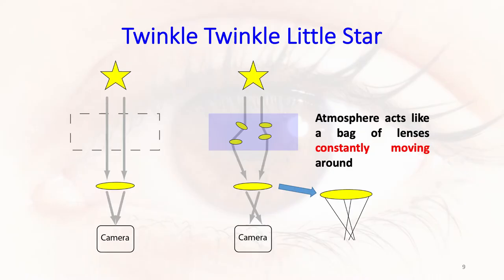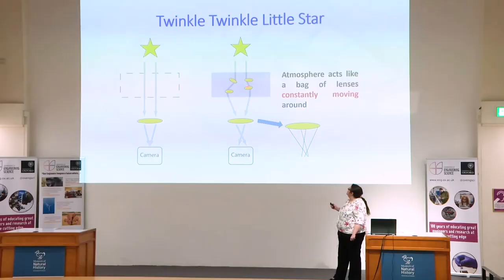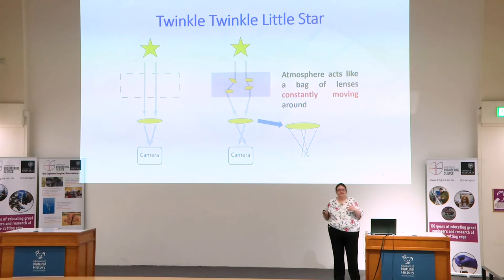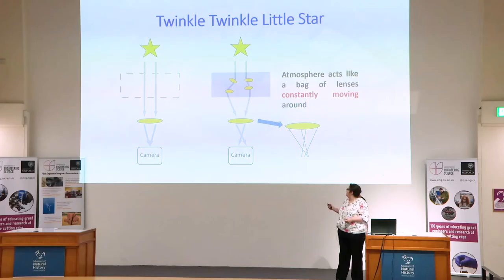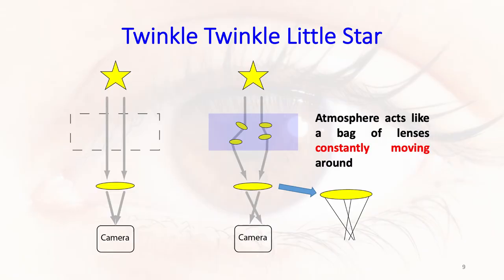Luckily, astronomers have the answer to this. The technique is called adaptive optics. Imagine you're viewing a star and there was no atmosphere — you'd get a nice image on your camera. But what's actually happening is that when you're imaging a distant object, the light rays pass through what you can think of as a bag of lenses constantly moving around — the atmosphere. The rays no longer meet and form a nice focus. You might have noticed this effect: if you look at a star far away and see it twinkling, this is because of the atmosphere.